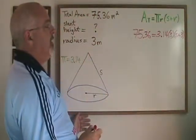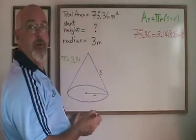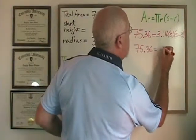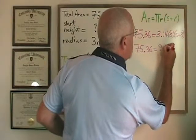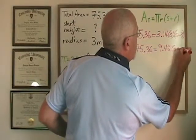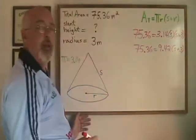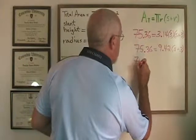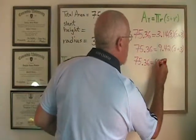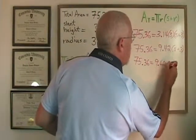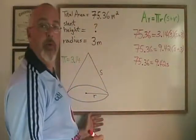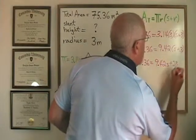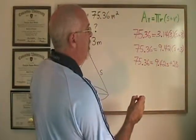The first thing I am going to do is multiply 3.14 by 3, which gives me 9.42. Then I am going to multiply the 9.42 across the bracket, which gives me 9.42s plus 28.26.